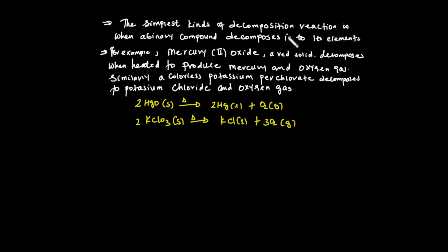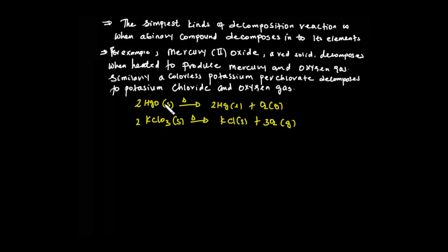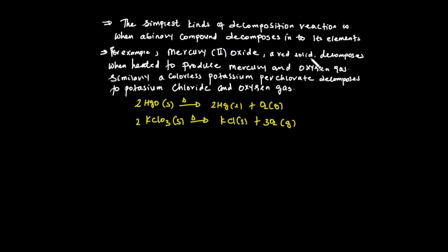The simplest kind of decomposition reaction is when a binary compound decomposes into its elements. For example, mercury oxide — a binary compound — is a red solid. It decomposes when heated to produce mercury and oxygen.